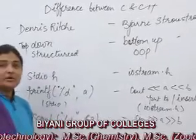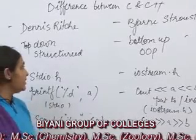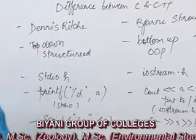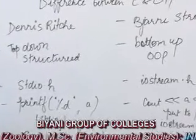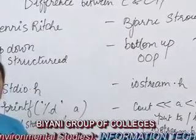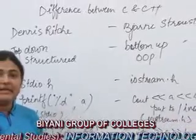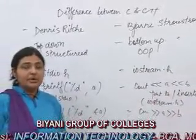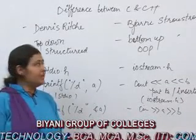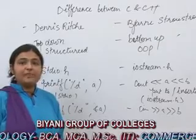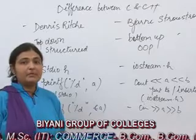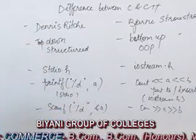C is a top-down structured programming language, whereas C++ is a bottom-up object-oriented programming language. Top-down means in C, the main function is developed first and then sub-programs are developed, whereas in C++ it follows a bottom-up approach where all the sub-functions are designed first and then integrated into the main function.